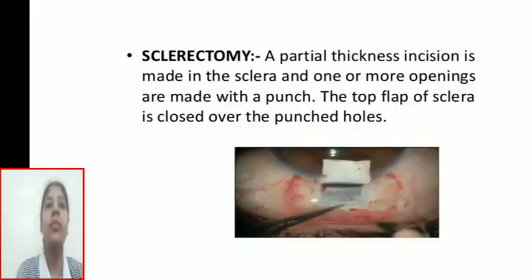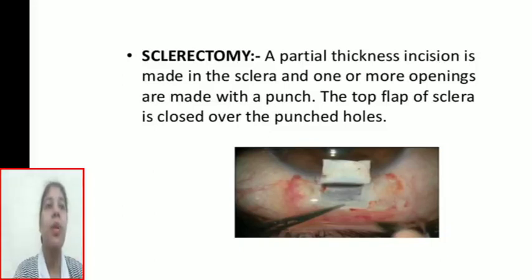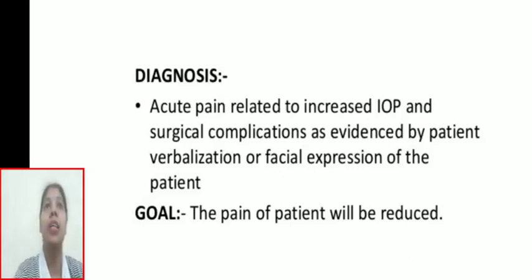Sclerotomy: a partial-thickness incision is made in the sclera and one or more openings are made with a punch. The top flap of sclera is then closed over the punched hole. Nursing diagnosis: acute pain related to increased intraocular pressure and surgical complications, as evidenced by patient verbalization or facial expression. Goal: the patient's pain will be reduced.